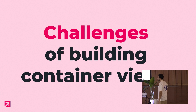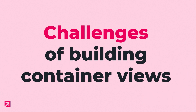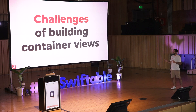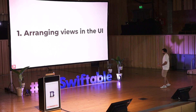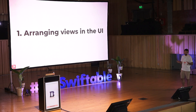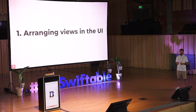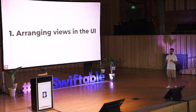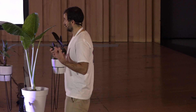Okay. So far we know what a container view is, what the library is, and what the library does. Now I want to share with you the challenges we faced during the library development. The first one is we need to arrange the views in the UI. The position and size of each view in the library depends on several variables and states: the content offset, the selected tab, and probably the patterns that use this library.